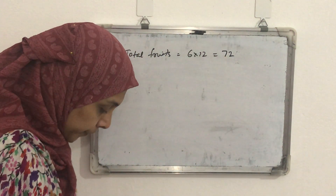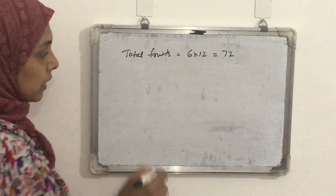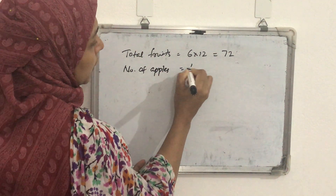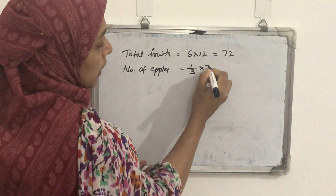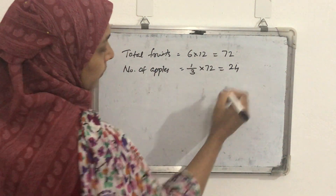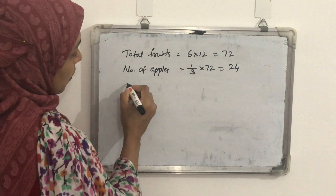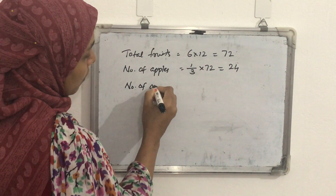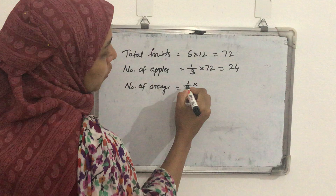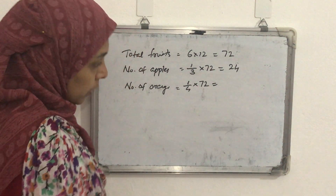1/3 of the fruits are apples, so number of apples = 1/3 of 72 = 1/3 × 72 = 24. Next, 1/4 of the fruits are oranges, so number of oranges = 1/4 of 72 = 1/4 × 72 = 18.